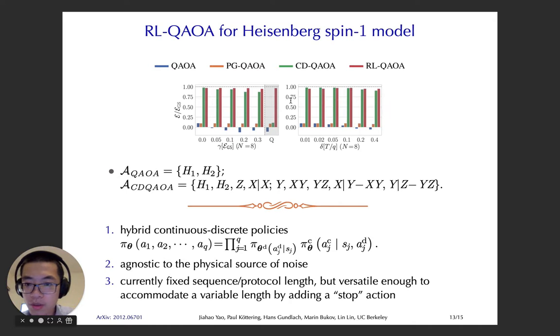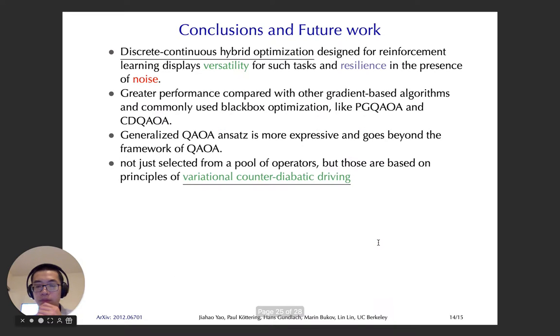So, little summary is the hybrid continuous discrete policy is given by this, and it also has the autoregressive property here. And it is agnostic to different physics sources of noise and different physics systems. And currently the protocol sequence length is fixed. And I think it can be with very simple adjustments, it can be versatile enough to have the variable length just by adding a stop action. So when the policy gives you a stop, you just stop there, and it will give you a different length of protocols.